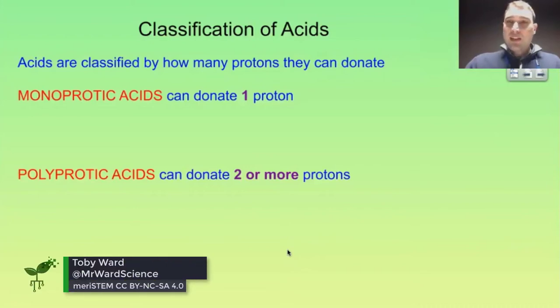So now we're going to talk about the classifications of acid. We can break acids up into two groups, there's the monoprotic and the polyprotic.